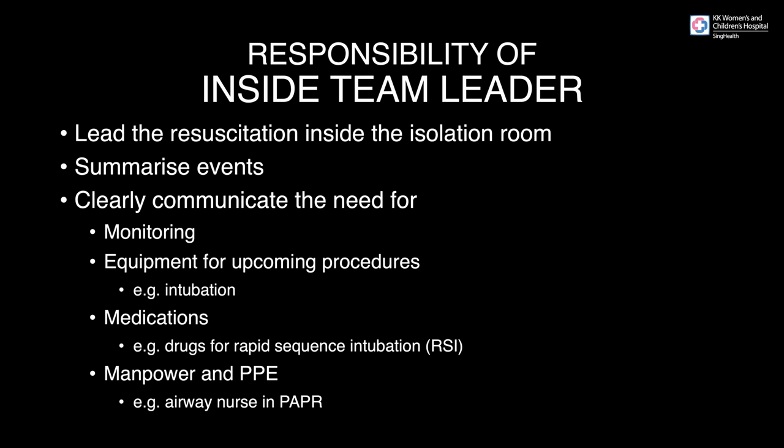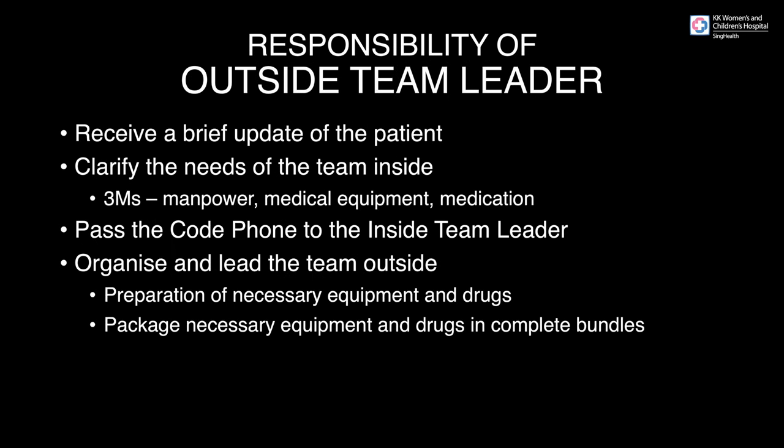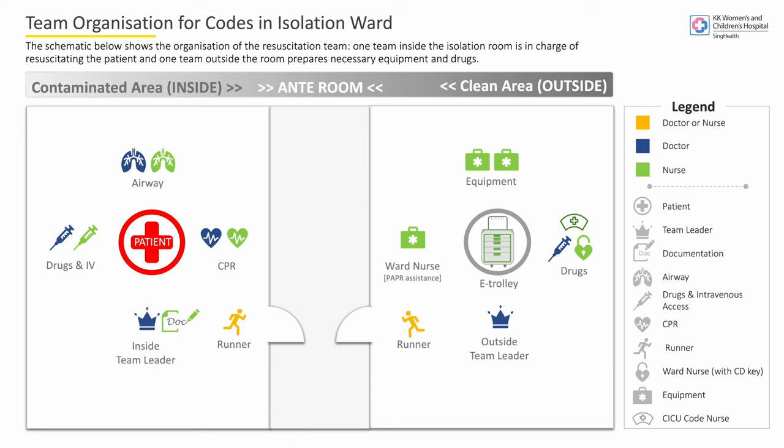As the inside team leader, clearly communicate the need for monitoring, equipment required for upcoming procedures, medications like rapid sequence intubation drugs, and manpower and PPE required such as an airway nurse with a PAPR. The outside team leader receives a brief update, clarifies the team's needs — the 3Ms: manpower, medical equipment and medication — passes the cold phone to the inside team leader, organises the outside team, prepares necessary equipment and drugs, and passes them into the room in complete bundles.